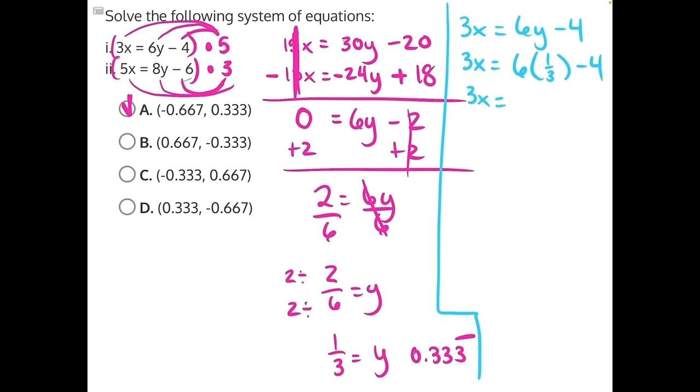That will give us 3x is equal to 6 times 1 is 6, and then we just keep the same denominator of 3 minus 4. And in this case, again, this is why I recommended this equation, 6 can be evenly divided by 3, so we will get a whole number. 3x is equal to 6 divided by 3 is 2.